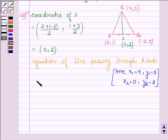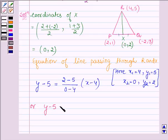Thus, the equation of the line is given by (y - 5) = ((2 - 5)/(0 - 4))(x - 4), or (y - 5) = (-3/-4)(x - 4).